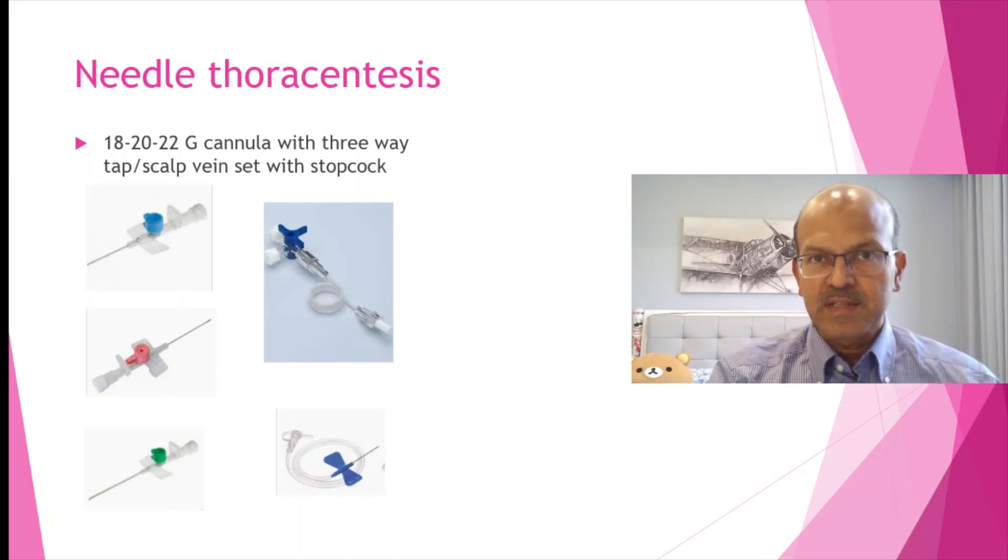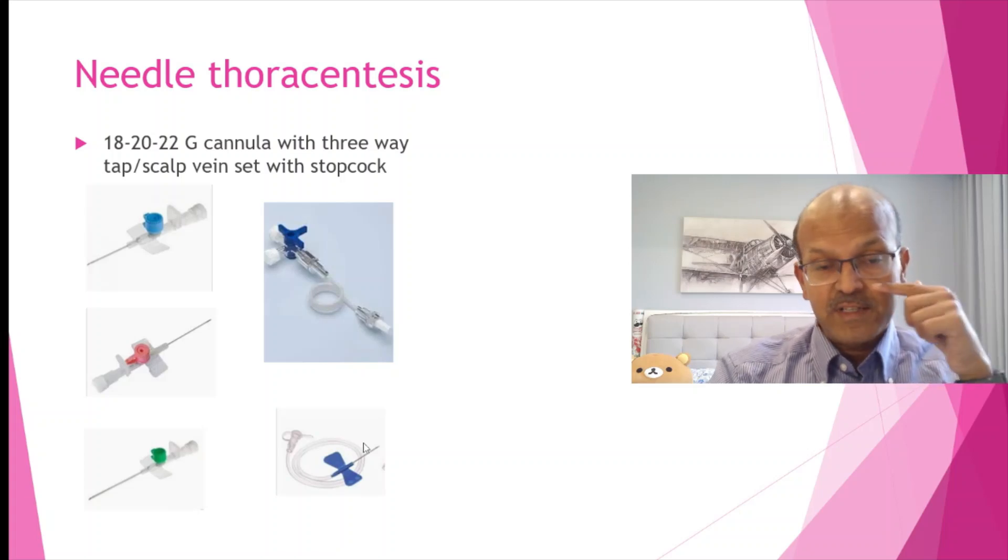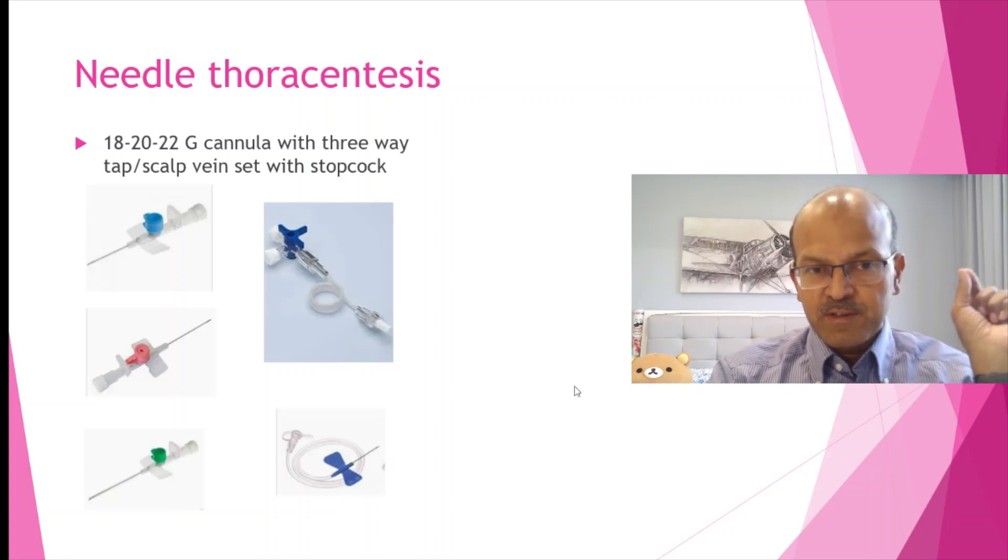Needle thoracocentesis is something that any pediatrician who looks after babies, not only a neonatologist, should be familiar with because it's a life-saving scenario, especially in a resuscitation environment, in the labor room even. Some of us might have used scalp vein sets. You can use a scalp vein needle if you don't have access to the appropriate sized venflon, but please don't leave the scalp vein needle in after the air is drained. The advantage of the cannulas or venflons is that the needle will be removed—it's only the soft cannula that's staying in the chest. There is no risk of lung tear if the needle stays in after the pneumothorax is drained. If your team is using a scalp vein set, make sure everyone understands that you shouldn't leave the needle in after the air is drained.